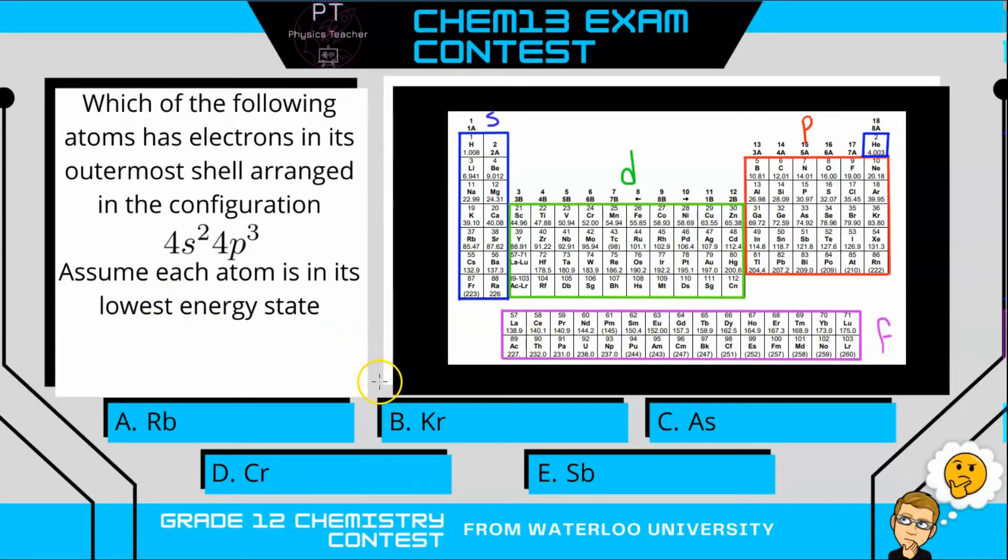All right, so to use the periodic table to determine quickly the electron configuration of any element in its ground state, I've organized it into blocks. You can see this is the S block, the P block, the D block, and the F block. Notice helium is also technically right there for the S block.